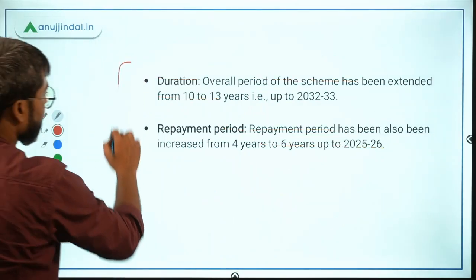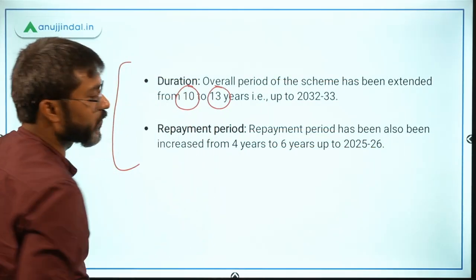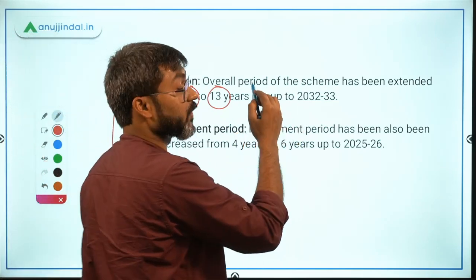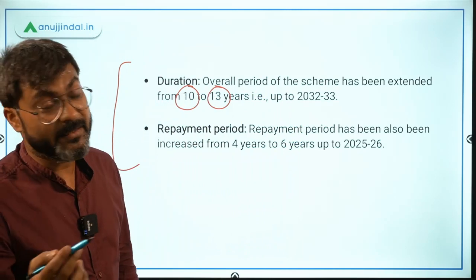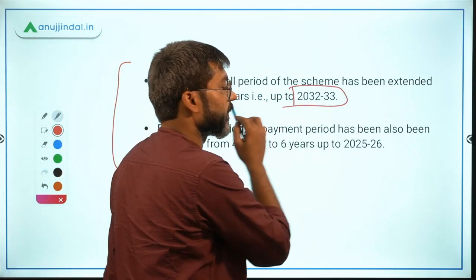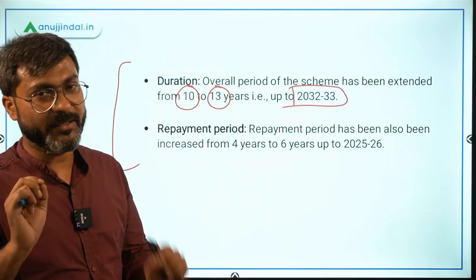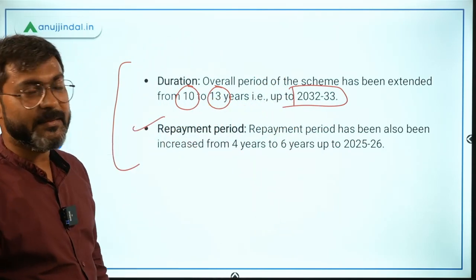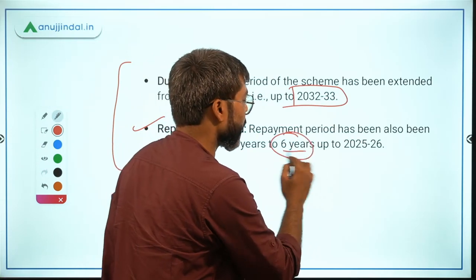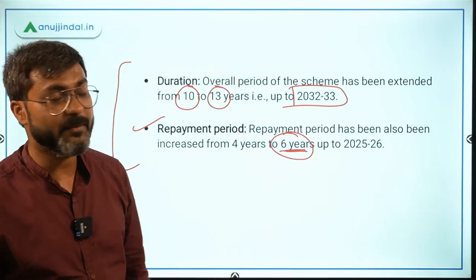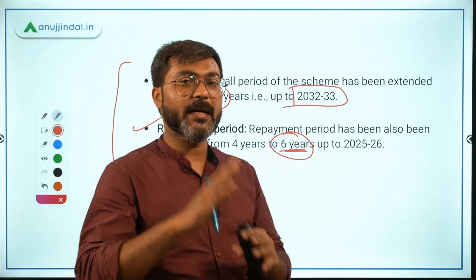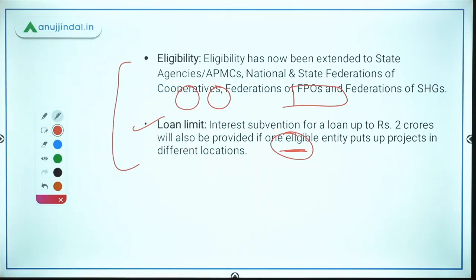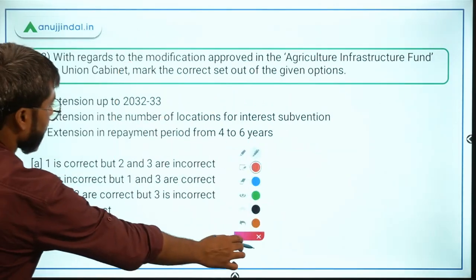The duration of the fund has been extended from 10 years to 13 years, up to the financial year 2032–33. The repayment period has also been extended from the existing 4 years to 6 years, up to 2025–26.